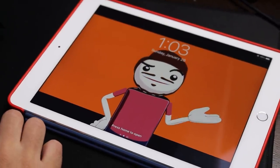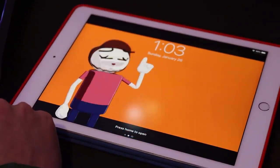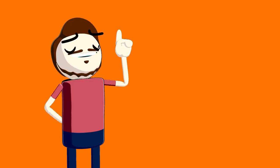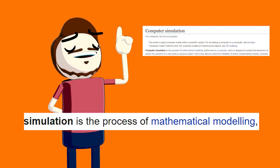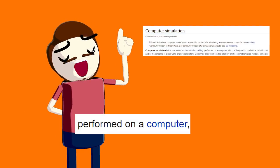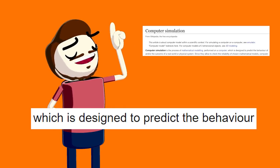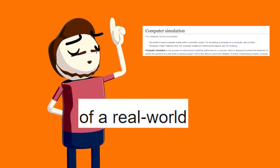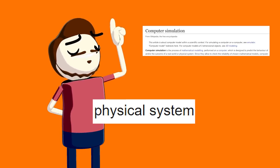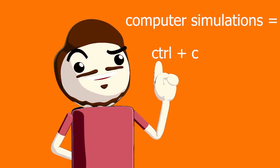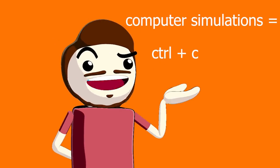Let's start with the concept of hair simulation. According to Wikipedia, a simulation is a process of mathematical modeling performed on a computer which is designed to predict the behavior or outcome of a real-world physical system. In other words, simulations copy what happens in the real world.